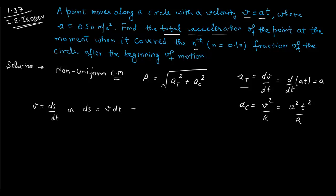Since v equals at, we write ds equals at dt. Integrating both sides: the left side goes from 0 to 2πrn — the nth fraction of the full circle — and the right side integrates time from 0 to t. This gives us the time at which the particle has covered the nth fraction of the total distance.